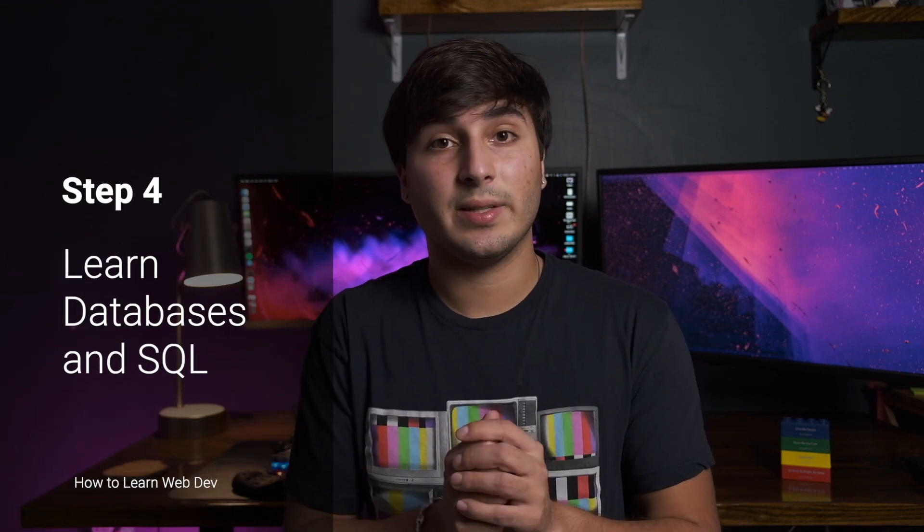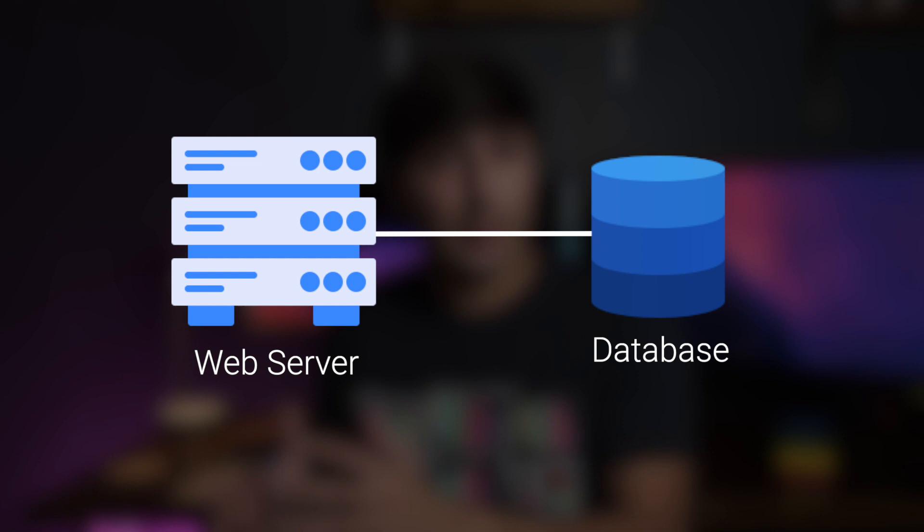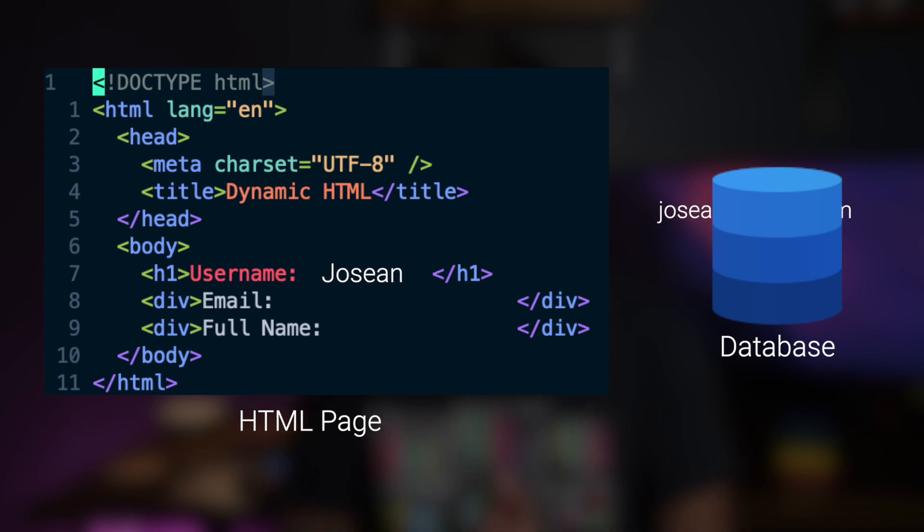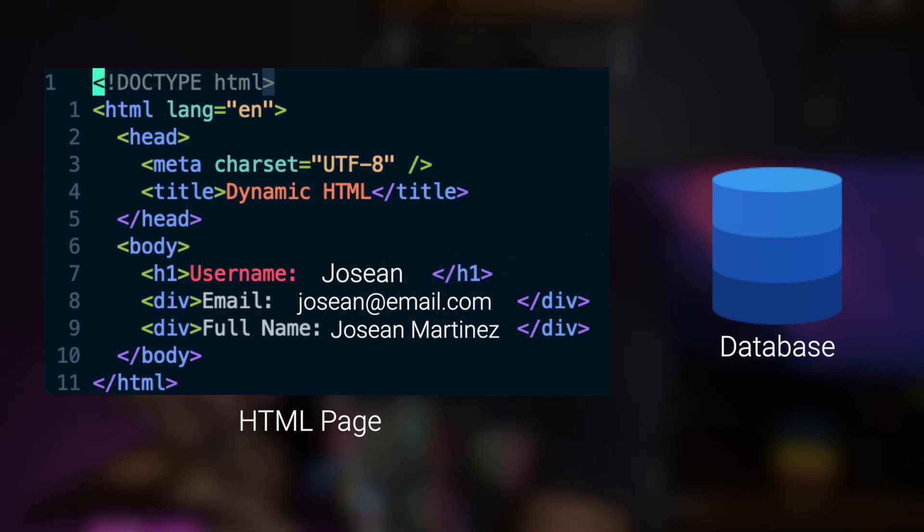After you've learned how to create a basic web server, you should then learn about databases and SQL. You should learn how to store data in relational databases and how to connect the database to the web server. Once you do this, your web server can now create dynamic pages that get filled up with data from the database. Once you've learned these things, you're at a pretty awesome point in your journey and you can create some pretty complex websites.